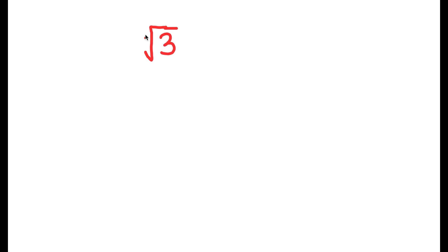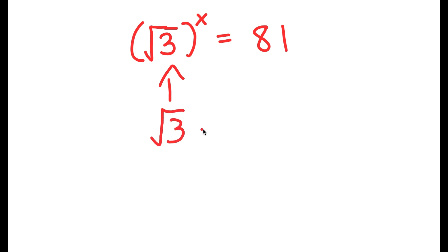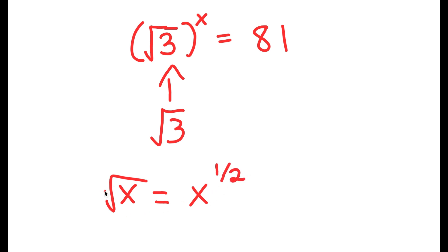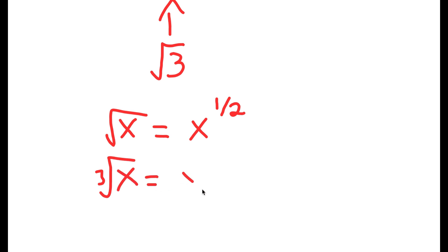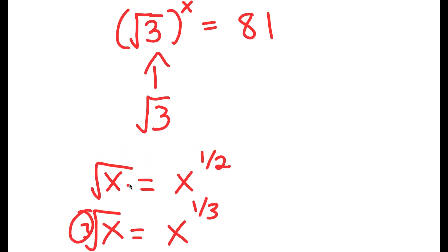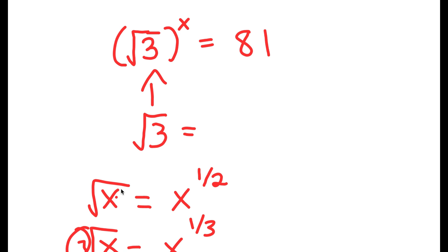So in this problem, we have the square root of 3 to the power of x is equal to 81. To solve this, I'm going to start with the square root of 3. The square root of a number — say the square root of x — is the same thing as x to the power of 1 half, because the root here is 2, but we just don't write that. The cube root of a number is that number to the power of 1 over 3. So the square root of 3 can be rewritten as 3 to the power of 1 half.